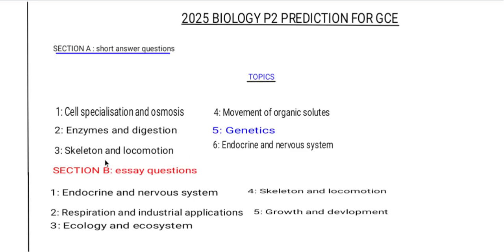Moving on to Section B, which consists of structured questions. The first topic likely to come is the endocrine and nervous system. You should be able to explain the different types of hormones, their functions, and where they are produced. You should also be able to draw and label diagrams of nerves such as the motor neuron.